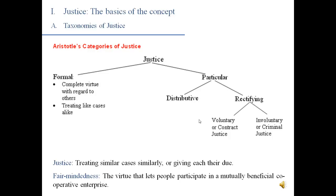Mostly what we deal with in healthcare is distributive justice. Distributive justice is justice that has to do with the normal functioning of a society. In the normal functioning of a society you have certain burdens and certain benefits — there's work and there's money. You have to decide who gets the work and who gets the money. Any time you are deciding who gets what, that's distributive justice. Interestingly, you can do the same sorts of things in both distributive and rectifying justice: a tax on rich people to pay for healthcare for poor people is distributive justice, while a fine levied against a rich person for illegal insider trading is rectifying justice because that person had to do something wrong before the fine was imposed.